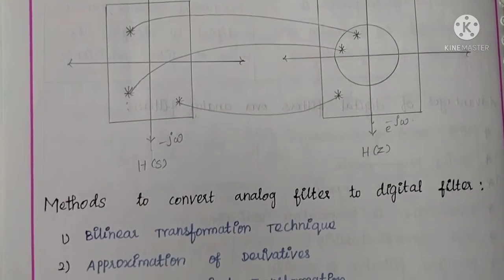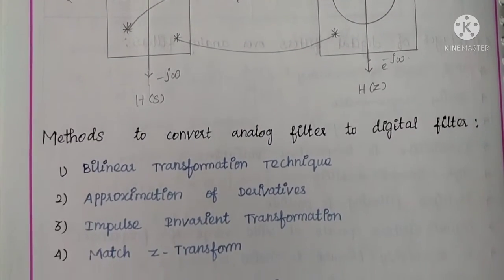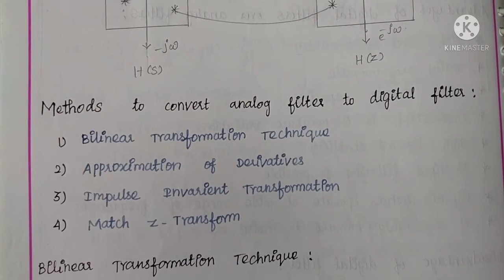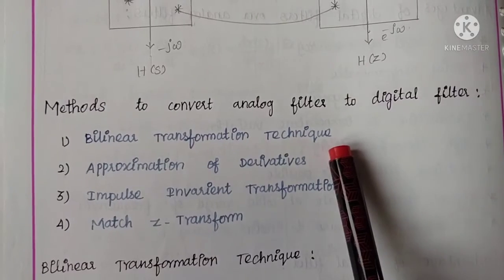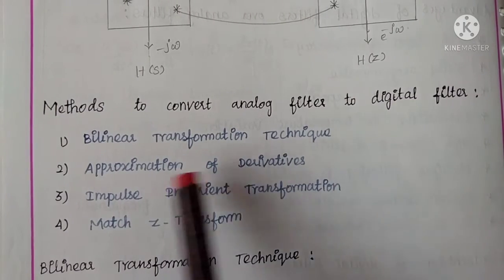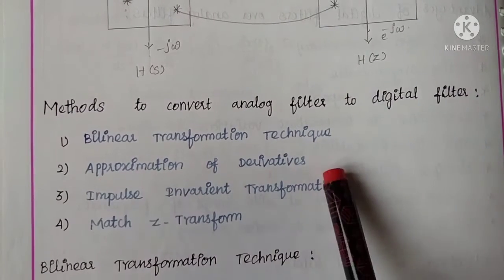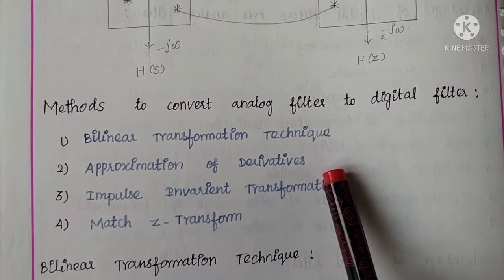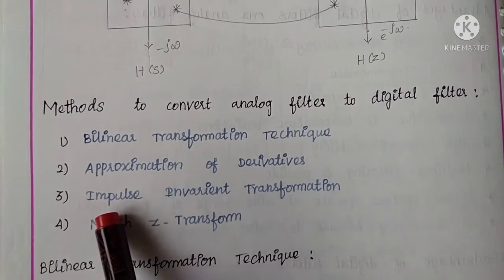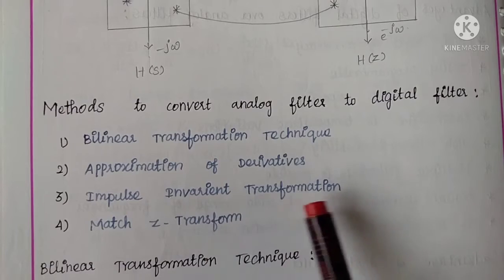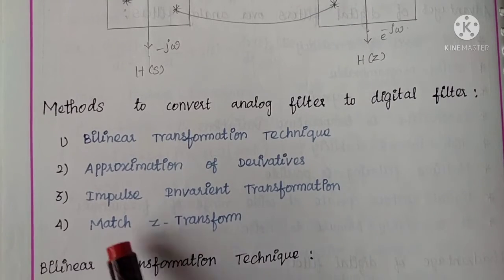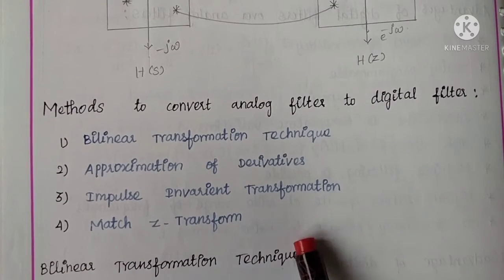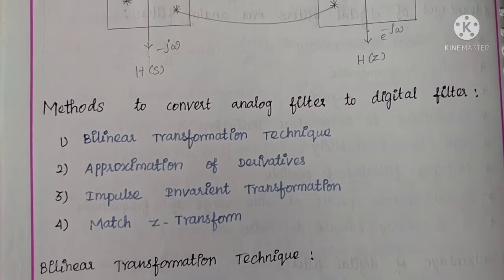Next we will see the methods to convert an analog filter to a digital filter. We have four methods: first, bilinear transformation technique; second, approximation of derivatives; third, impulse invariant transformation; and fourth, matched Z-transform.